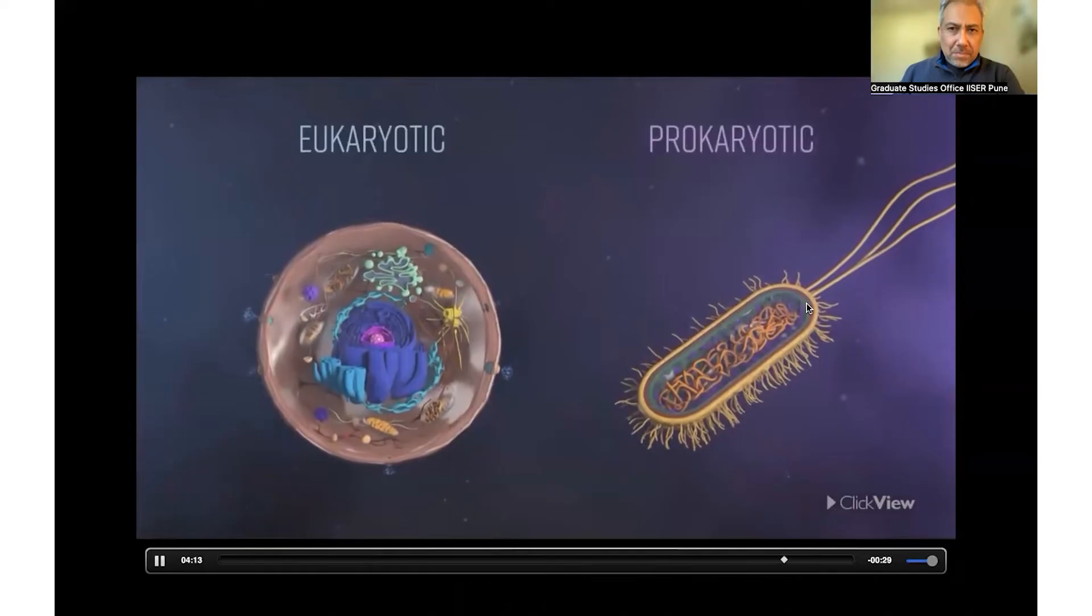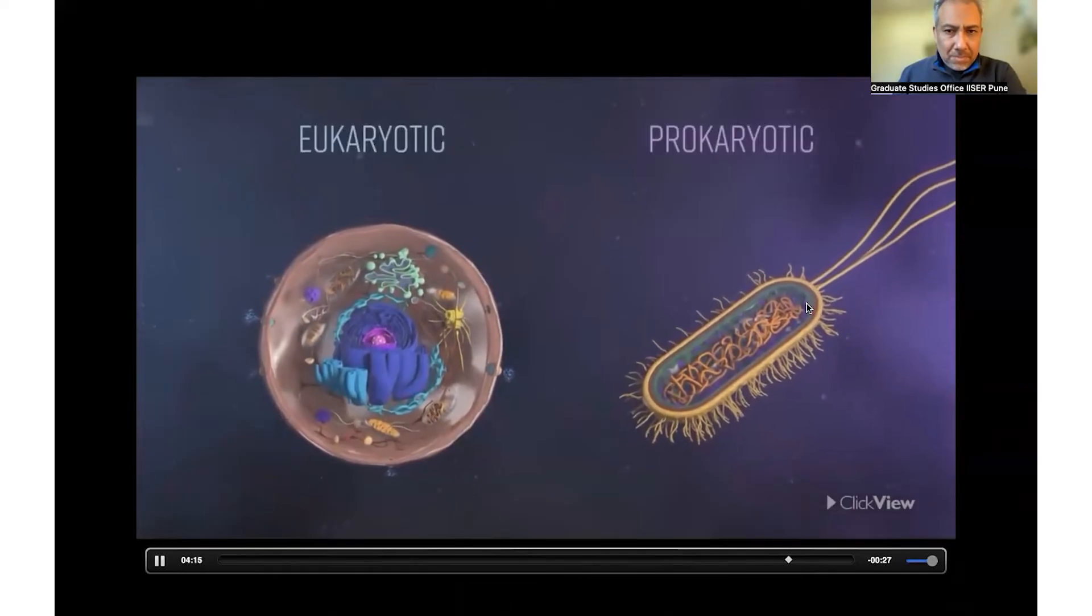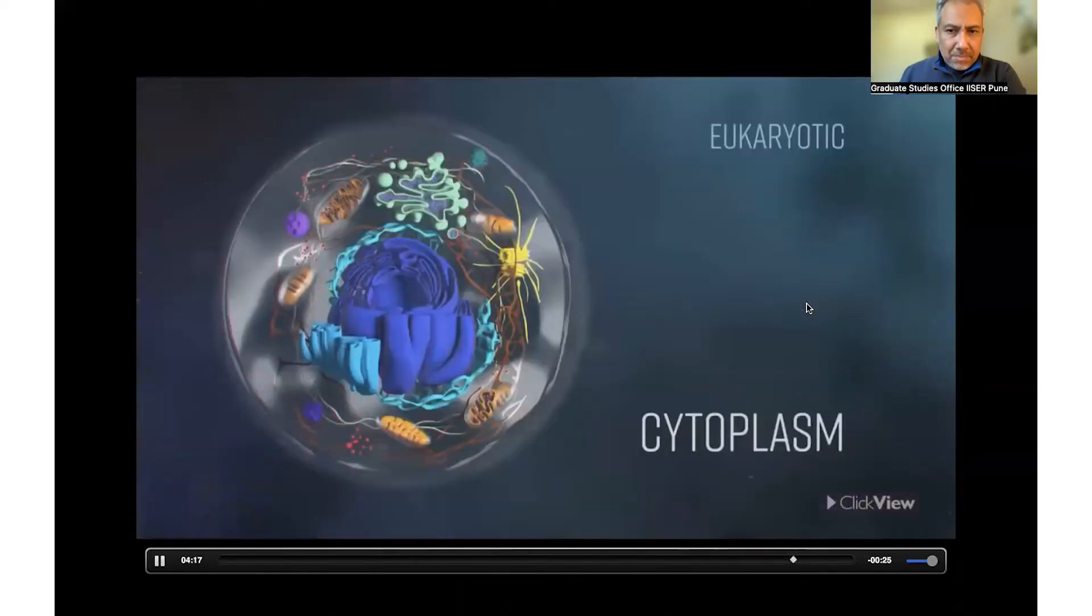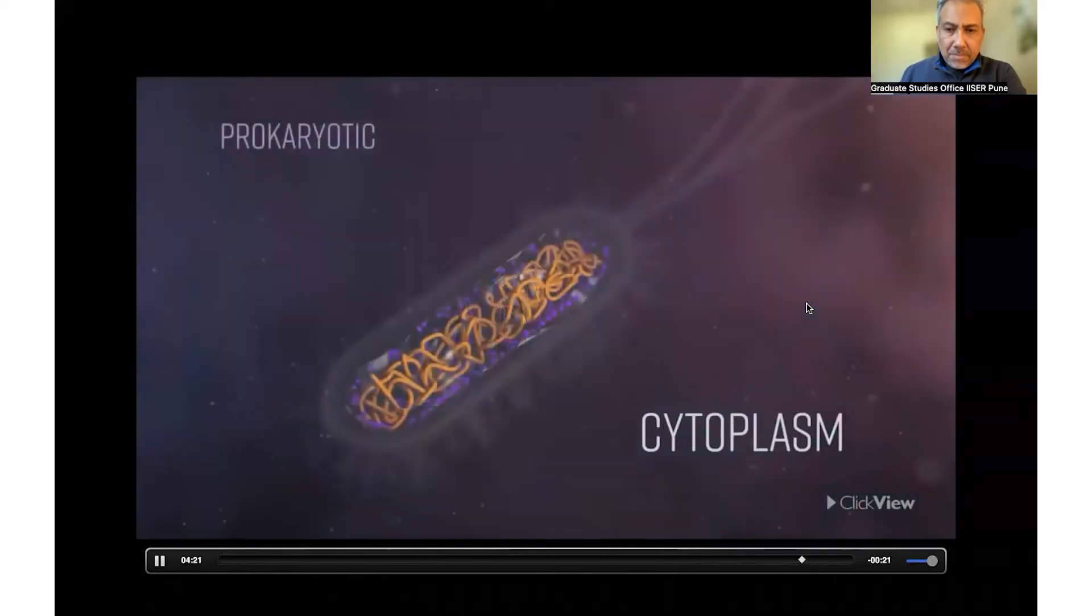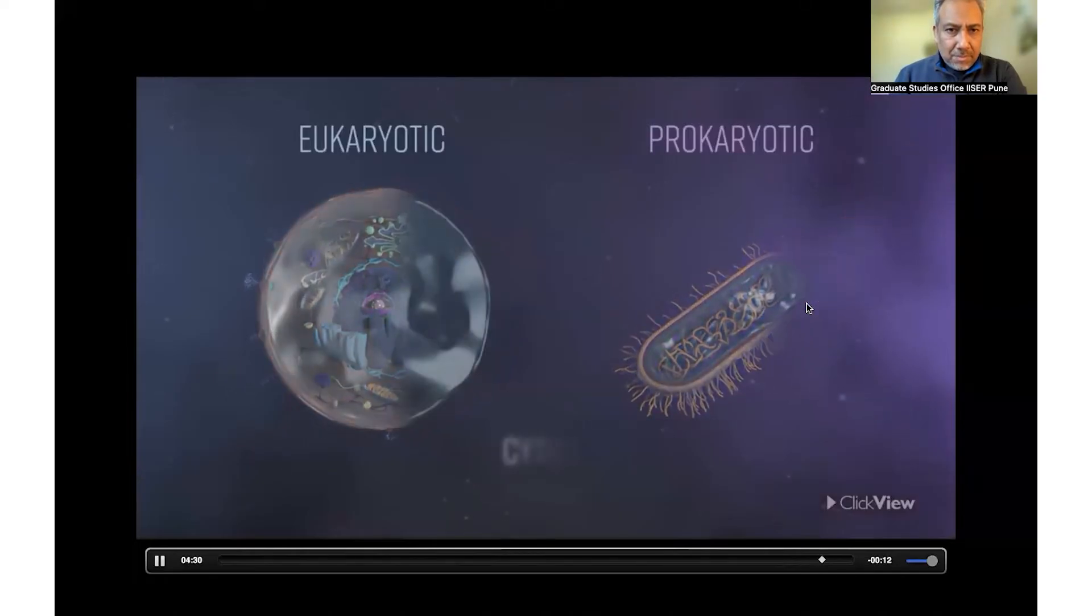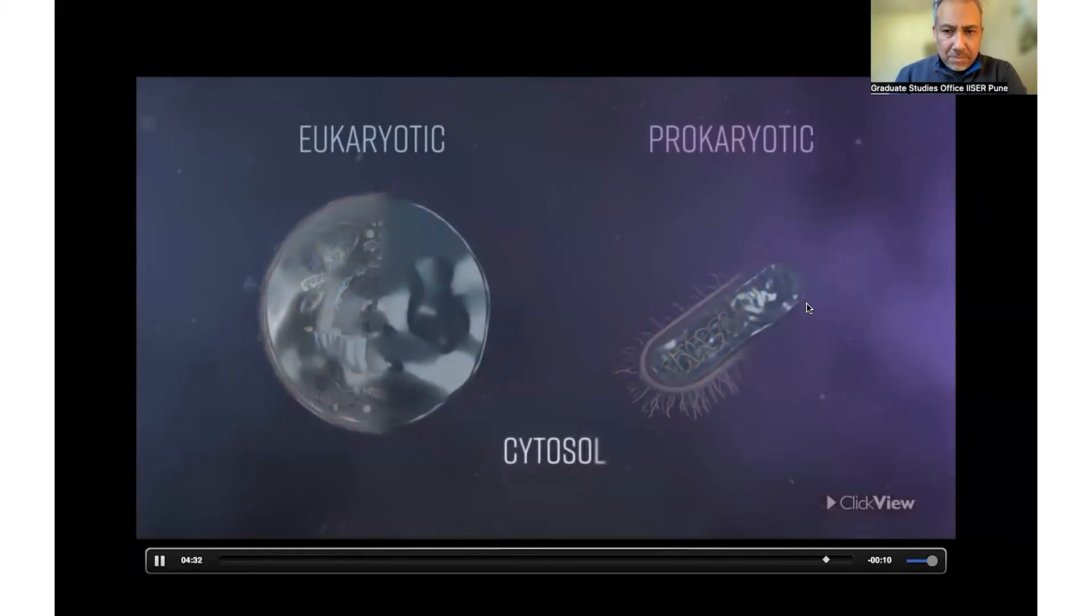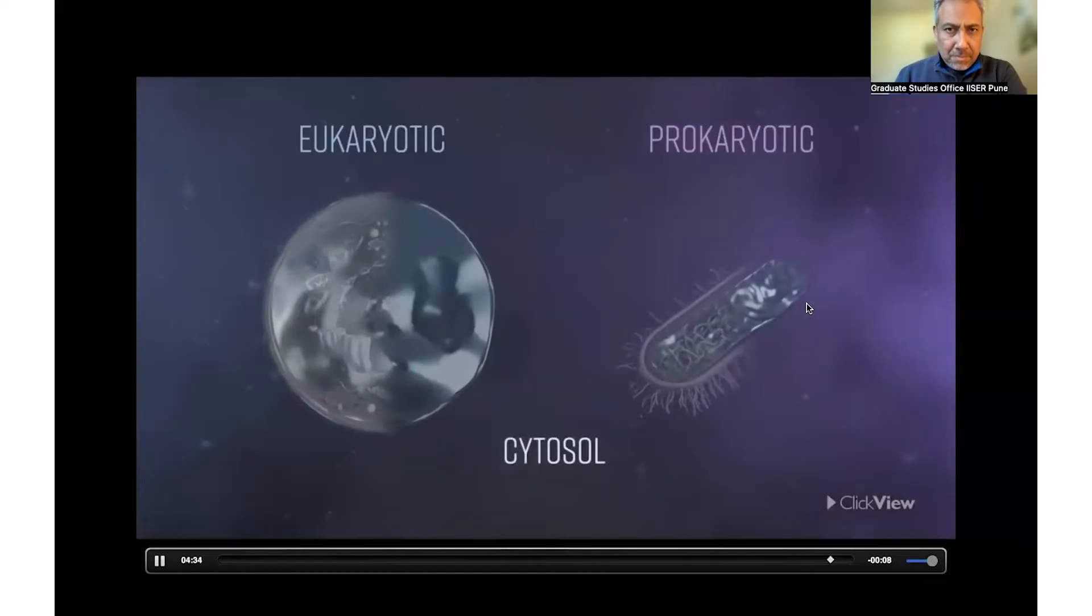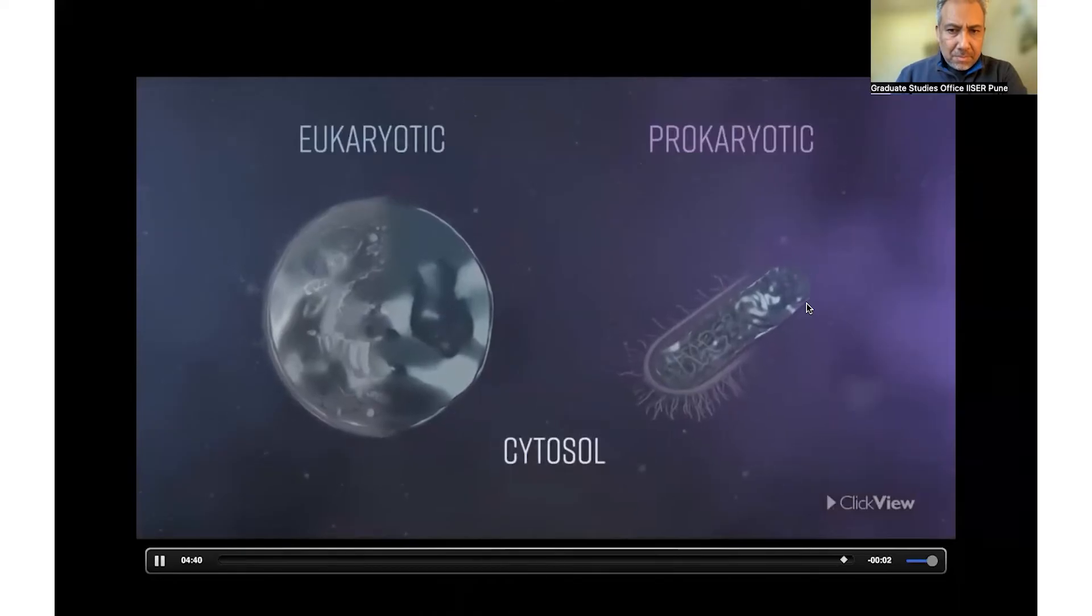Both also contain cytoplasm, but in eukaryotic cells, it is defined as everything within the cell outside of the nucleus. In prokaryotic cells, the cytoplasm refers to everything contained inside the cell membrane. The gel-like cytosol is a major part of the cytoplasm in both types of cell. This solution is the site of many of the cell's metabolic processes, such as the synthesis of protein.